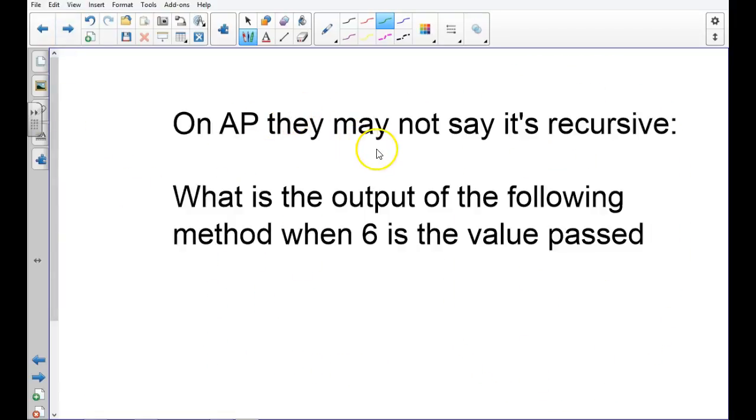Okay. So, on the AP exam, important to note, they may not say it's recursive. You have to identify the method as recursive because you'll see it call itself. They won't say, hey, this is a recursive method. You have to be able to identify that for yourself. They may ask a question, what's the output when the value 6 is passed into the method?